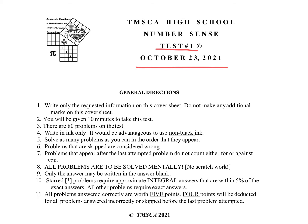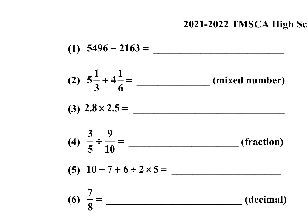Problem number one: 96 minus 63 — that's 33. And then 54 minus 21 — that's also 33. So 33 33 is the answer for number one.